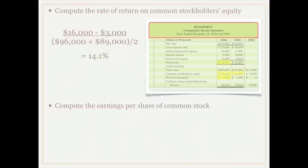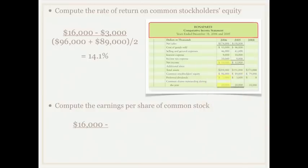Now we want to compute the earnings per share of common stock. We're still using the same numerator: net income less preferred dividends — 16,000 minus 3,000 — and now we divide that by the number of shares of common stock that are outstanding, which in this case is 20,000 shares. This gives us 65 cents. So there is 65 cents of net income generated by just one share of common stock that is outstanding.